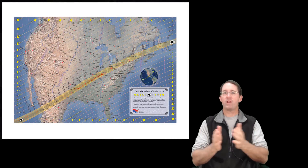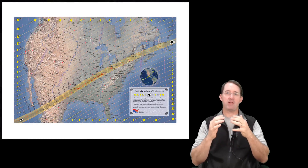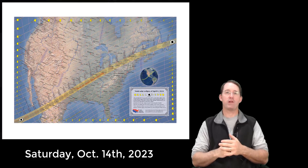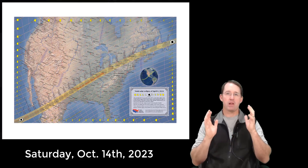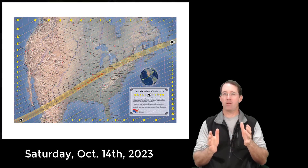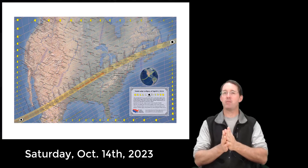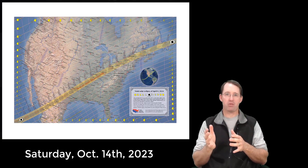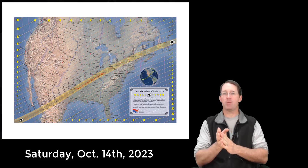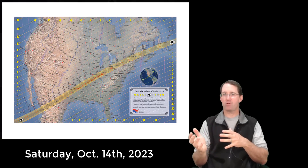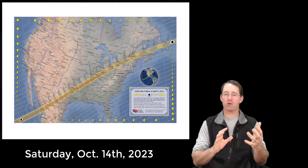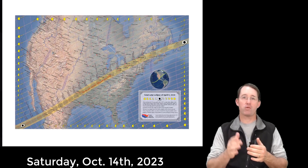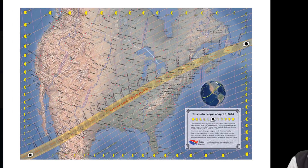We in the Western Hemisphere are going to get to experience a spectacular annular solar eclipse on October 14th, 2023. There's a lot to cover on this particular eclipse, so I'm going to try and move fast. We're going to begin by looking at how the maps showing the paths of eclipses are different for annular solar eclipses compared to total solar eclipses. Let's start by taking a look at the map for the total solar eclipse on April 8th, 2024.